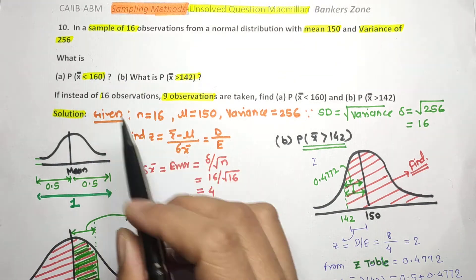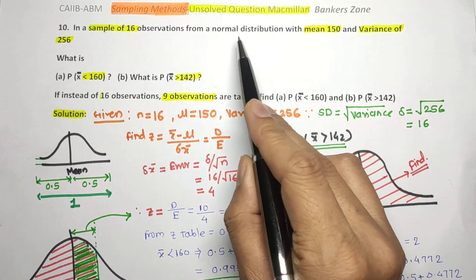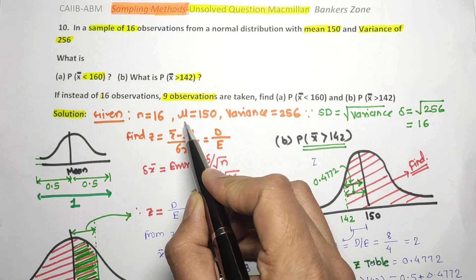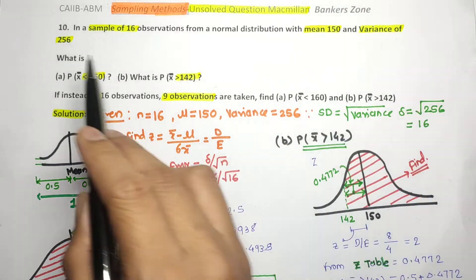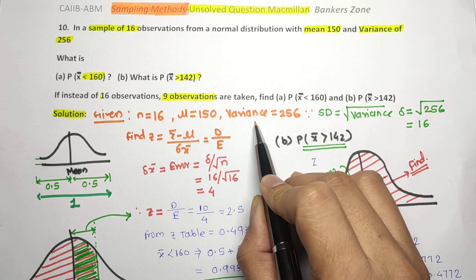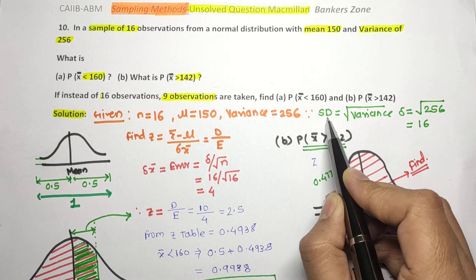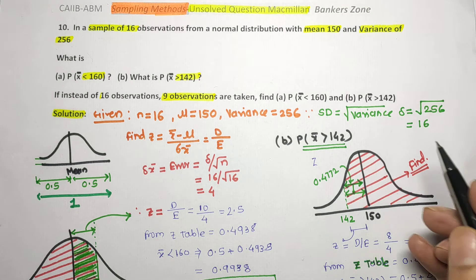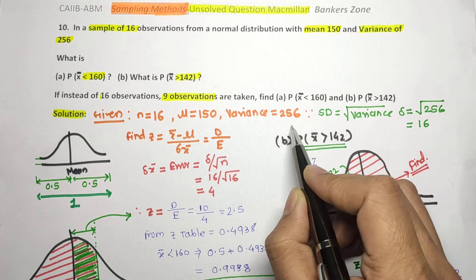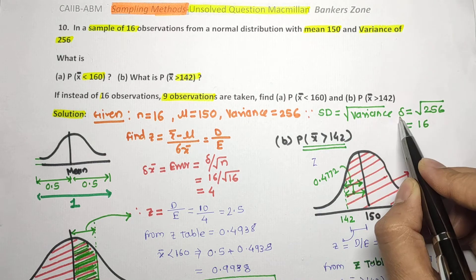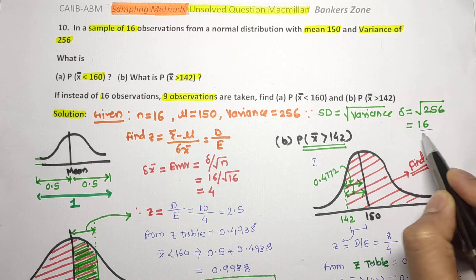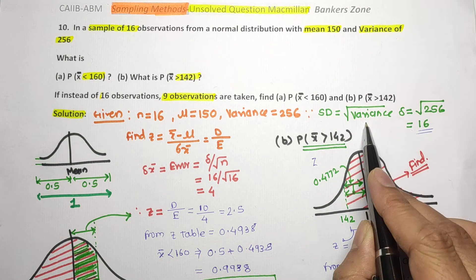They have given a sample of 16 observations, so small n equals 16. The mean of the normal distribution is 150, so mu equals 150. Variance is given as 256. While calculating probability we need standard deviation, and standard deviation equals the square root of variance, so standard deviation equals the square root of 256, which is 16.